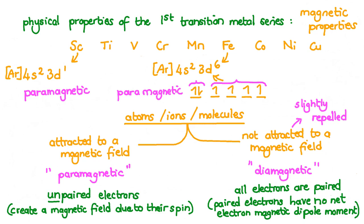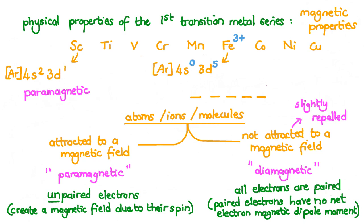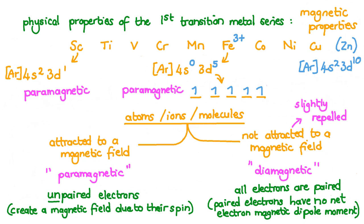Now let's consider the Fe³⁺ ion. Two electrons are removed from the 4s subshell and one from the 3d subshell to create Fe³⁺. Placing the remaining 3d electrons into separate orbitals shows that Fe³⁺ is also paramagnetic, containing 5 unpaired electrons. For zinc, writing its electronic configuration reveals 10 3d electrons — that is, 5 pairs. Zinc has no unpaired electrons and is therefore diamagnetic.